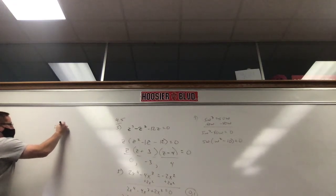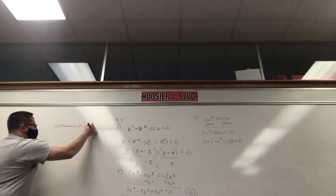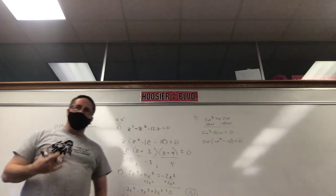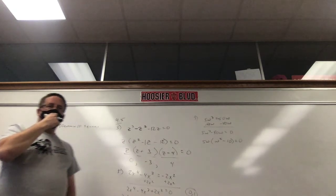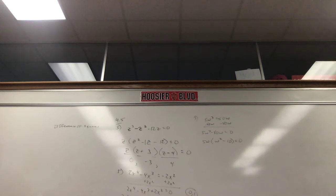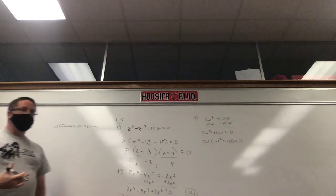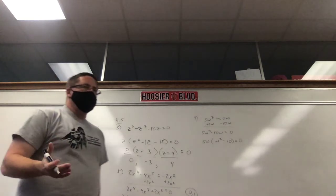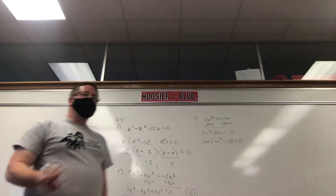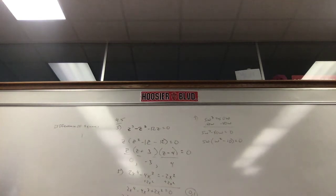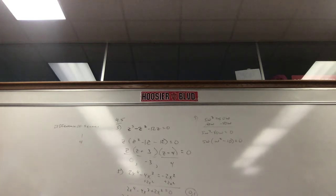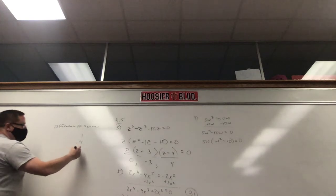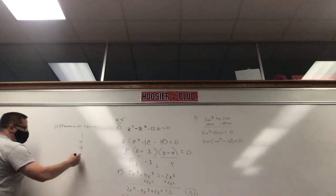Difference of squares — difference means subtract. A difference of squares. Just watch for a second; after three or four examples, you'll have these down really quickly. Square numbers: 1 is 1 squared, 4 is 2 squared, 9 is 3 squared, 16 is 4 squared, 25 is 5 squared, and so on. The tenth square number is 100 — ten times ten. I don't want you to memorize the list; I want you to understand where it comes from.